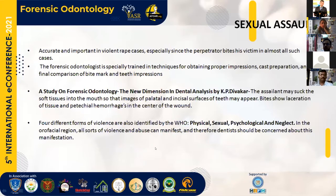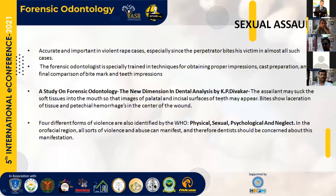Next is sexual assault. Bite marks are crucial in identifying the victim. The forensic odontologist is trained for obtaining proper impressions and cast marks. A study on forensic odontology as a new dimension in dental analysis by K.P. Divagar has shown that saliva produces marks on soft tissues in the mouth, and images of palatal and incisal surfaces of teeth may appear. Four types of violence can occur over the orofacial region: physical, sexual, psychological, and other violence. Bite marks are commonly connected with sexual assault and are seen over the breast region in females and the perineal region in males.